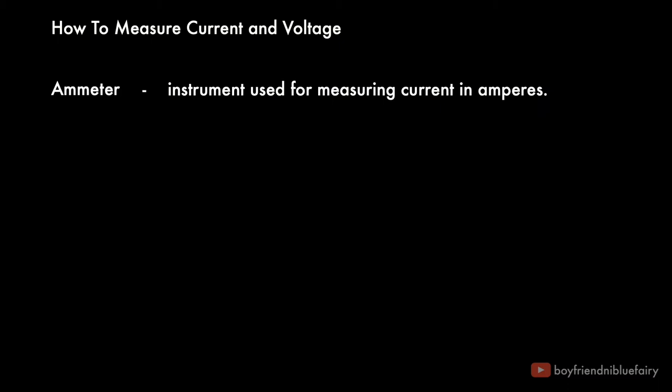To start, what is an ammeter? An ammeter is an instrument used for measuring current in amperes. In circuit diagrams, an ammeter is represented by a letter A enclosed by a circle.